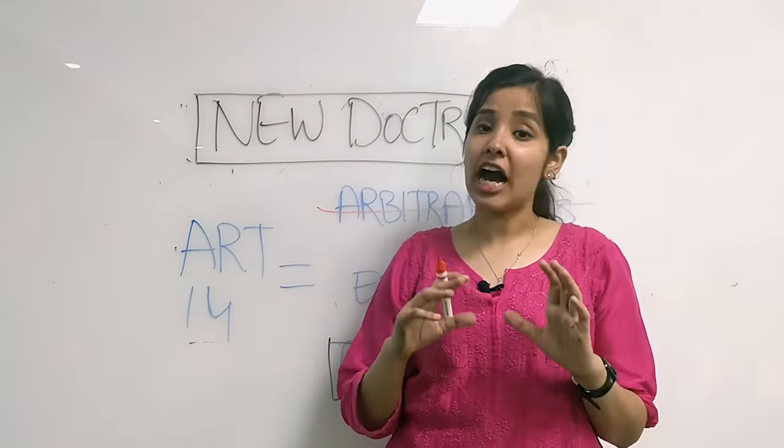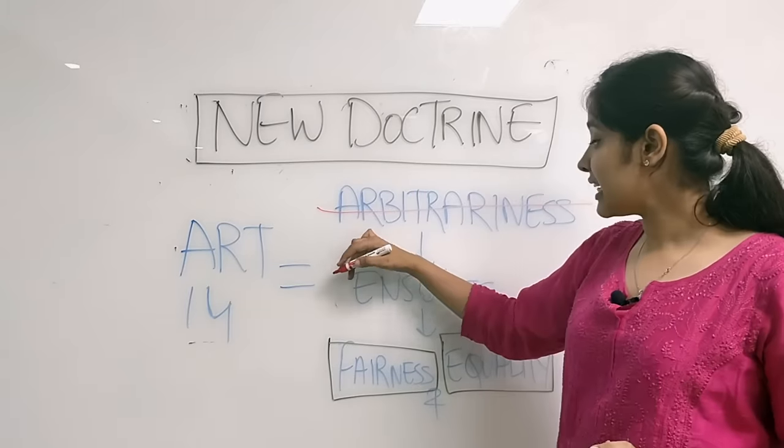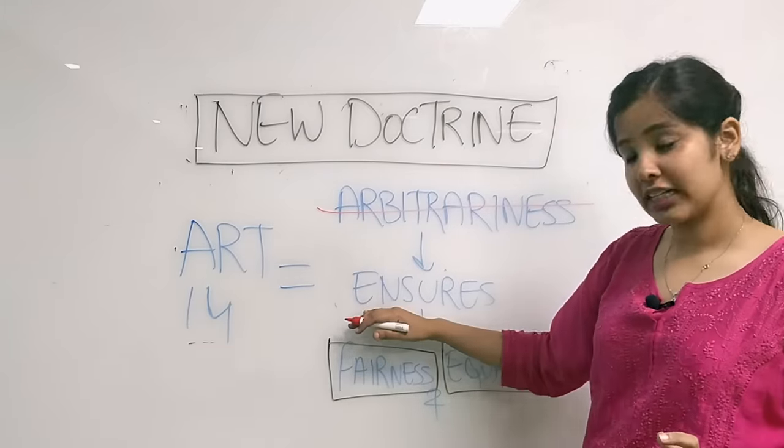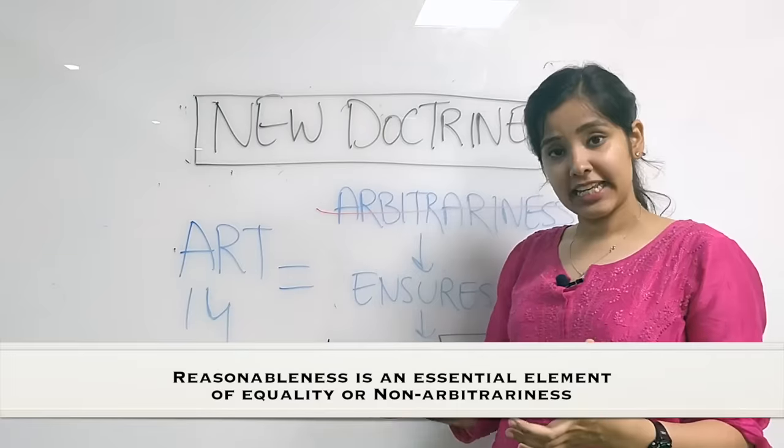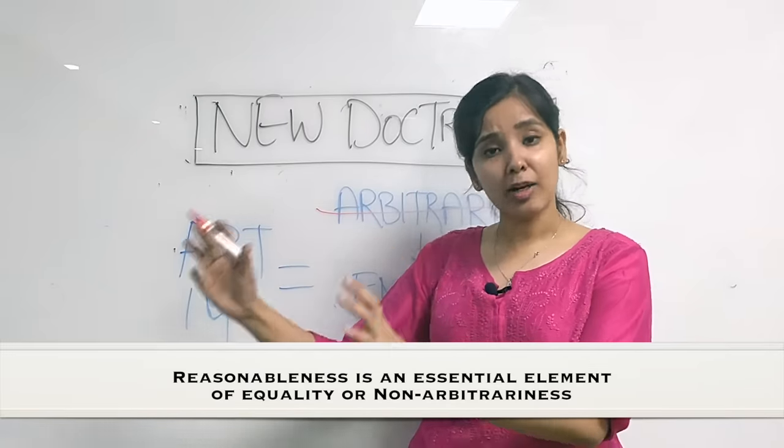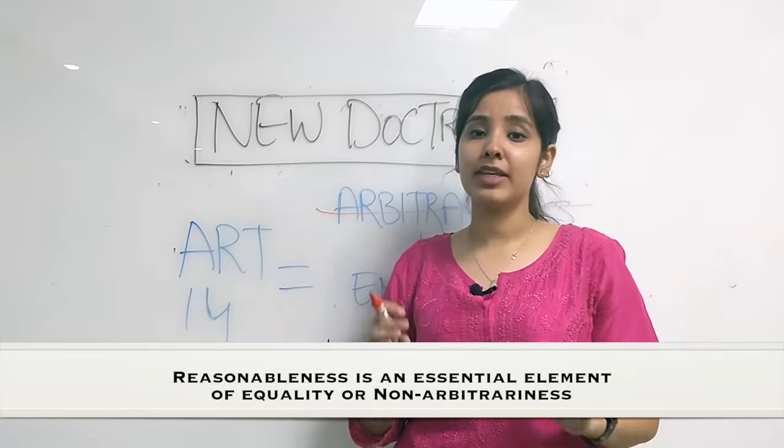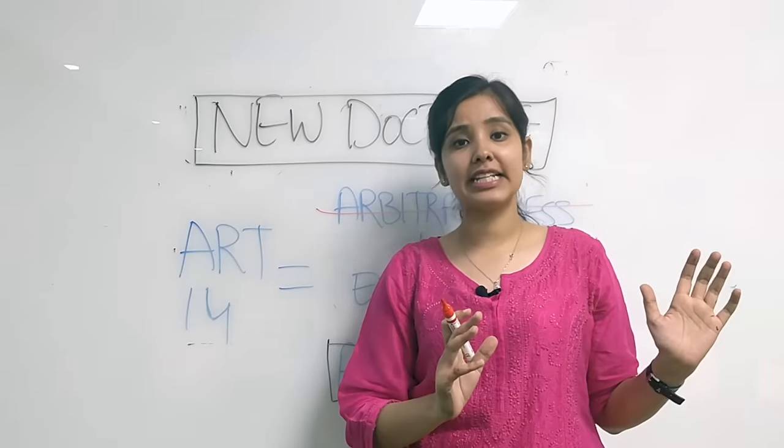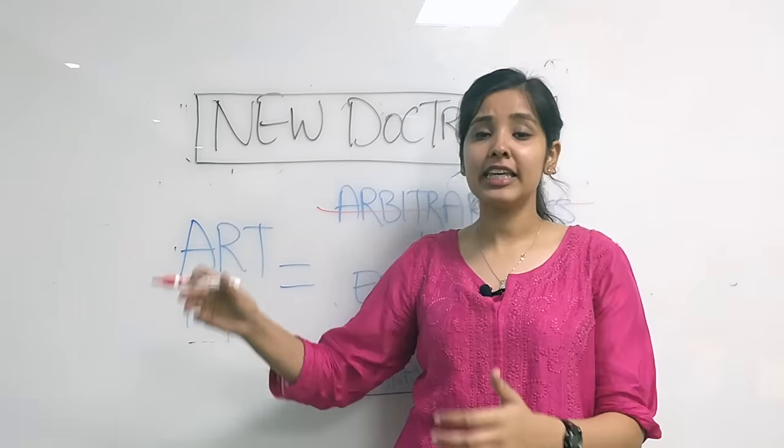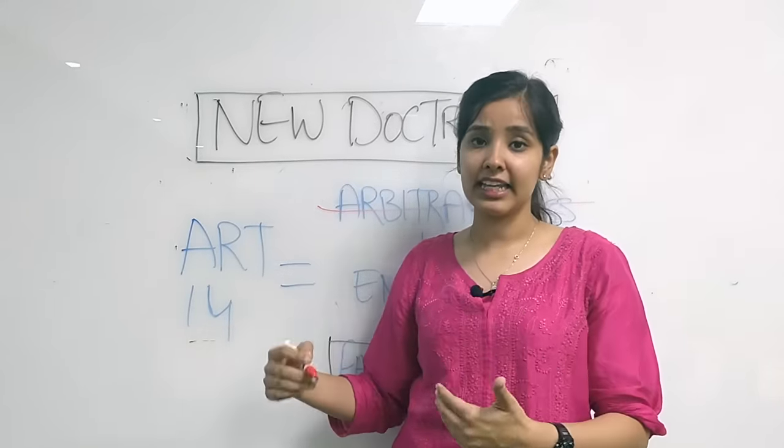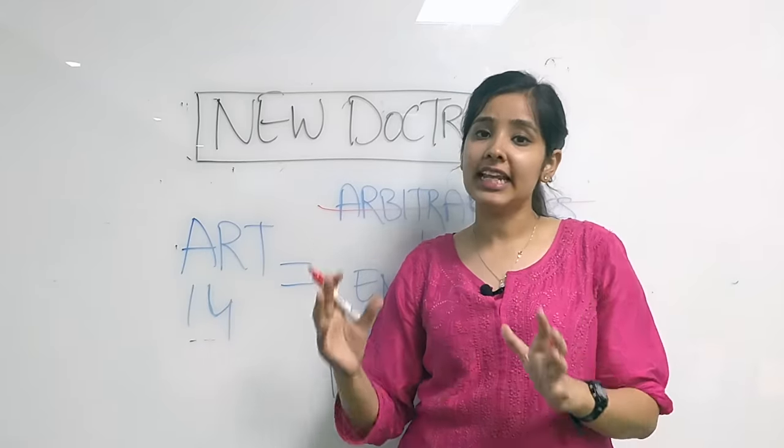Article 14 ka sole maksad yahi hai ki woh state action se arbitrariness strike out kar sake. State ka koi bhi action arbitrary nahi ho. Aisa karne se, Article 14 ensure karta hai fairness and equality. Court ne yeh kaha ki agar koi bhi action arbitrary hua toh iska seedha matlab yeh hota hai ki woh equality se against hai. Isse farak hi nahi padta ki kya woh koi test qualify kar raha hai ya nahi. Agar woh arbitrary hua, then it is against equality.